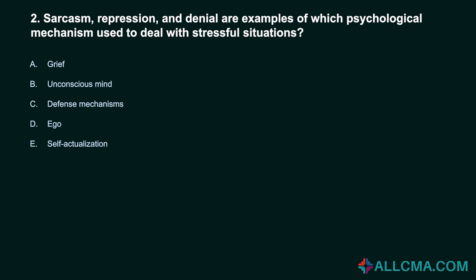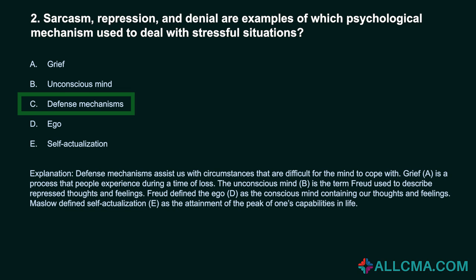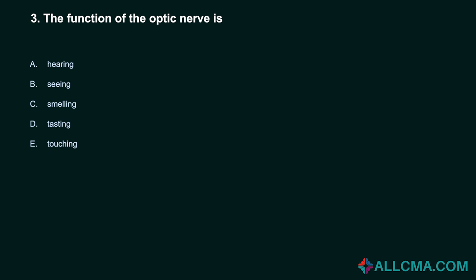Question 2: Sarcasm, repression, and denial are examples of which psychological mechanism used to deal with stressful situations? a) grief, b) unconscious mind, c) defense mechanisms, d) ego, e) self-actualization. Correct answer: C, defense mechanisms. Defense mechanisms assist us with circumstances that are difficult for the mind to cope with. Grief is a process experienced during a time of loss. The unconscious mind is Freud's term for repressed thoughts and feelings. Freud defined the ego as the conscious mind. Maslow defined self-actualization as the attainment of the peak of one's capabilities in life.